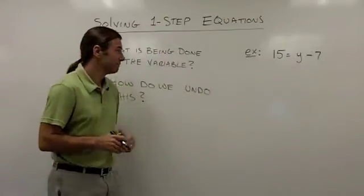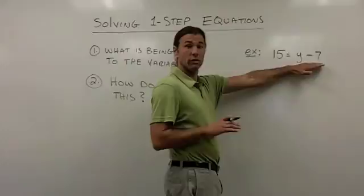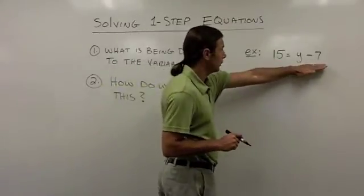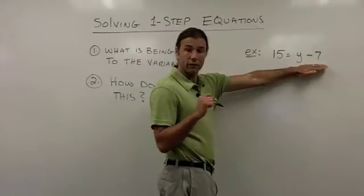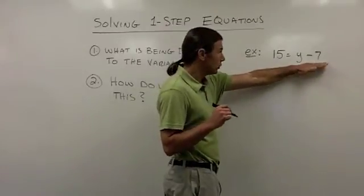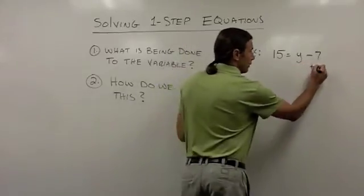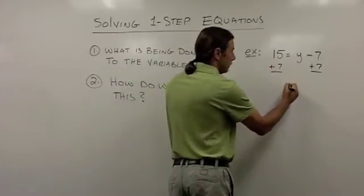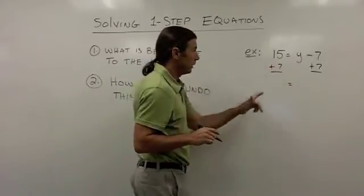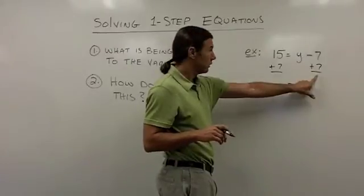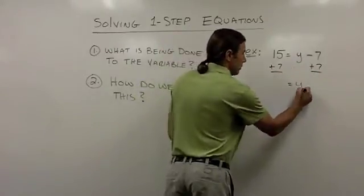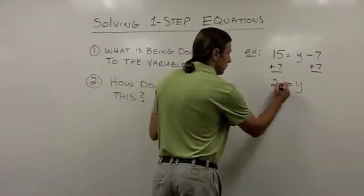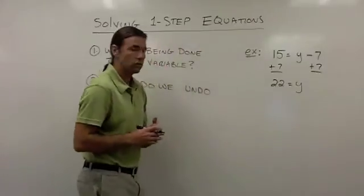In my next example, the variable side has been shifted to the right side. When I ask what is being done to the variable, I'm looking over here and it looks like 7 is being subtracted from y. So to undo the subtraction of 7, I'm going to add 7. Since I add 7 to the right side, I'm going to add 7 to the left side as well. Negative 7 plus 7 gives me 0, so all that's left on the right side is y. On the left side, 15 plus 7 gives me 22. So the solution is y equals 22.